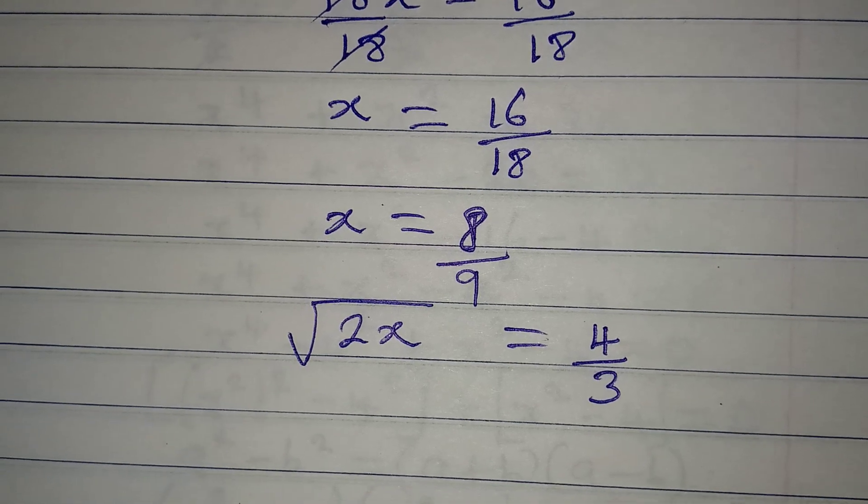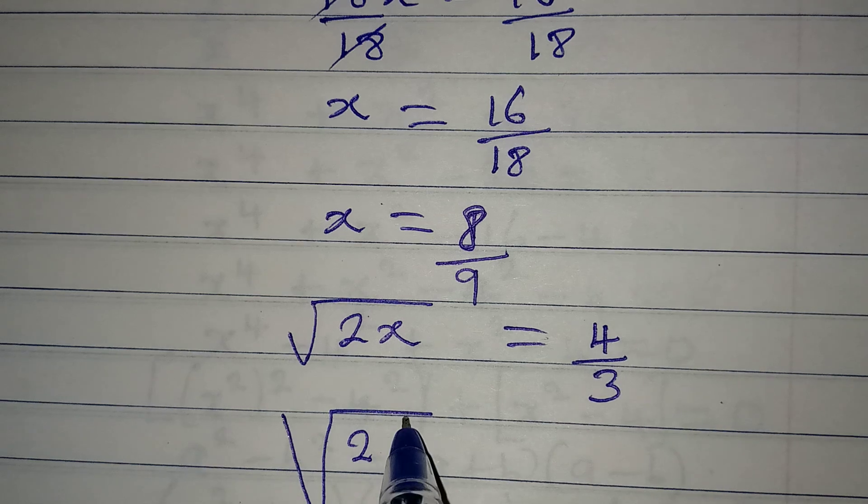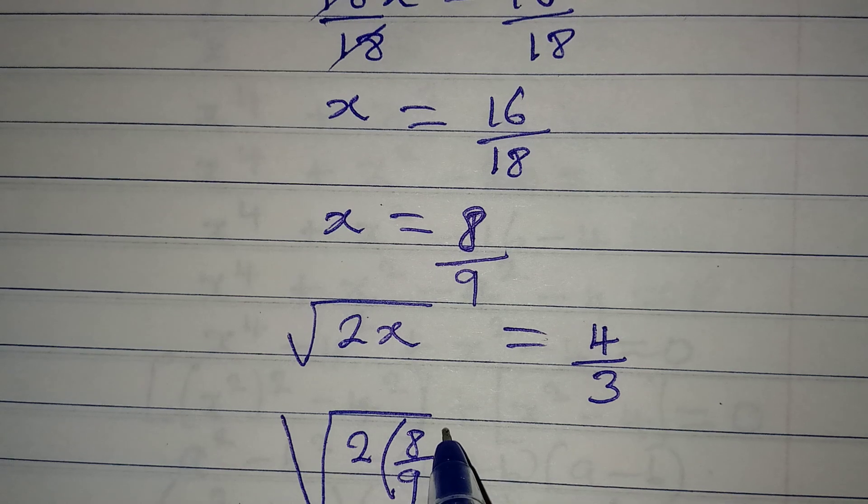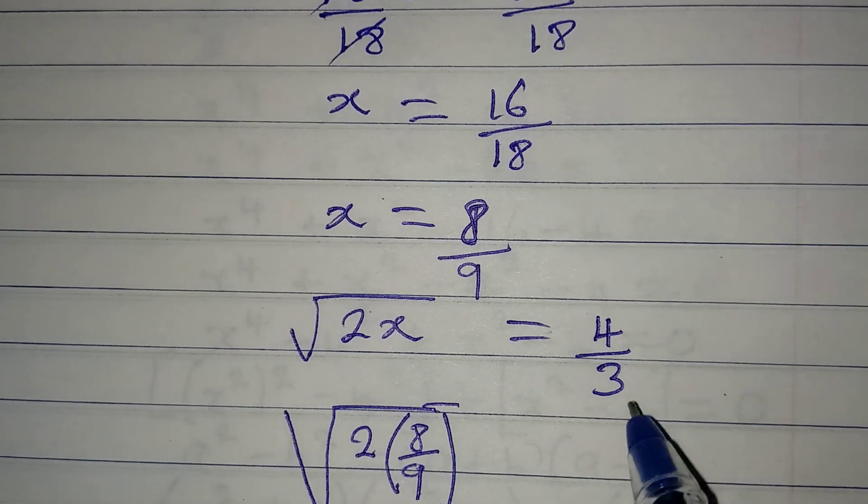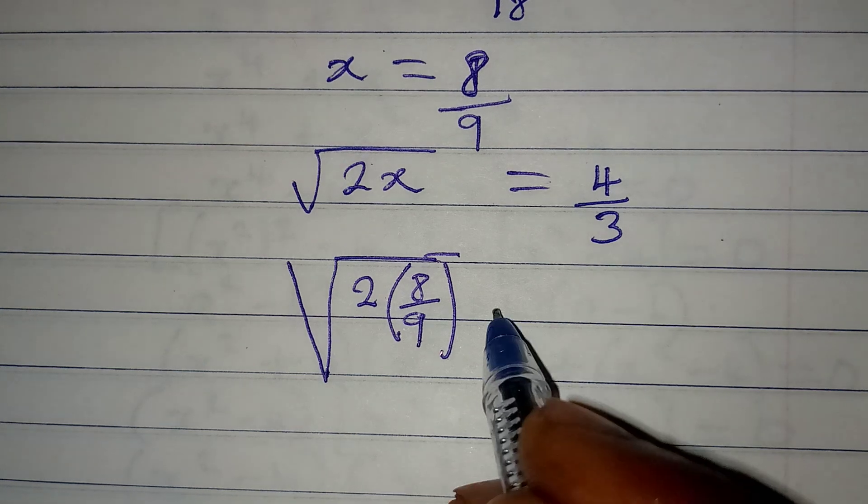Now let me put in the value of x here. We'll be having square root of 2 into 8 over 9. So will this give us 4 over 3? And the answer is yes.